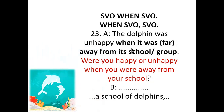The dolphin was unhappy — we will study the past form of to-be, modals, and tense verb sentences at the elementary level. When we tell a story in the simple past tense: 'The dolphin was unhappy when it was far away from its school.' Were you happy or unhappy when you were away from school last year? I was unhappy when I was away from my school last year because I loved my school.